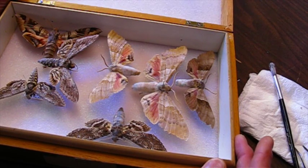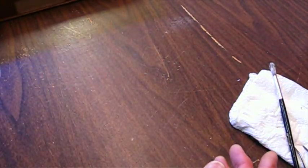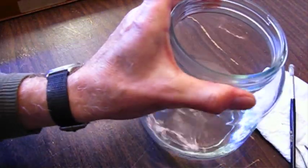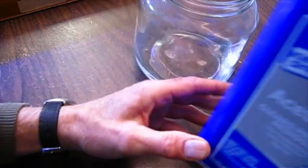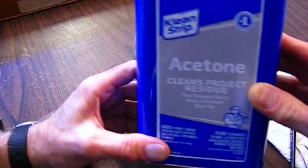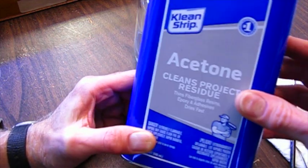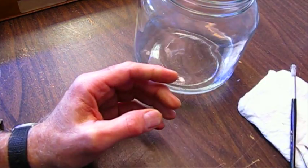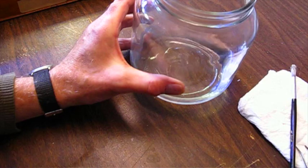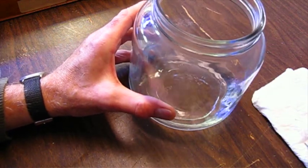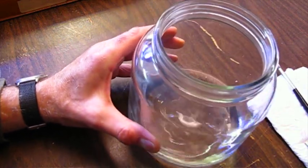I use acetone for this, so I'm going to show you what I've developed. I have a jar of acetone here. Acetone is a solvent, it's flammable and toxic, so you want to be careful with it. I'm in a fairly large room, it's pretty well ventilated, so I'm not too worried about it right now.